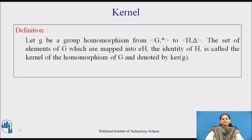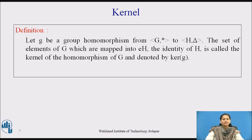Next, we have a special definition related to a group which was not defined earlier for semi-groups or monoids — this is termed as a kernel. Let g be a group homomorphism from G, star to H, delta. The set of elements of G which are mapped into e_H — the identity of H — is called the kernel of the homomorphism g, and is denoted by ker(g).